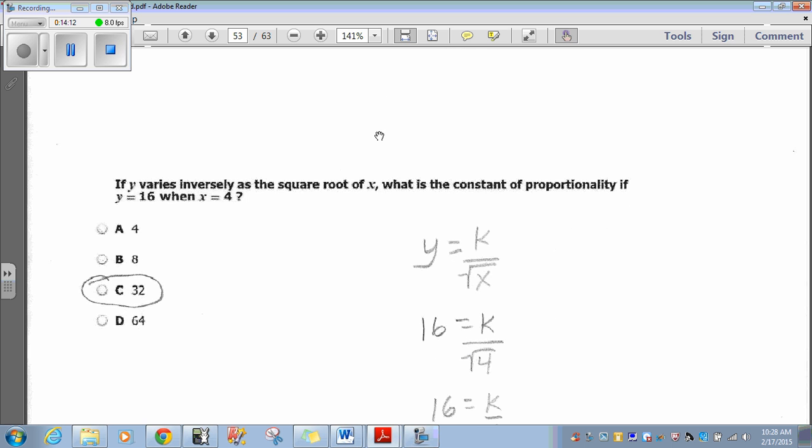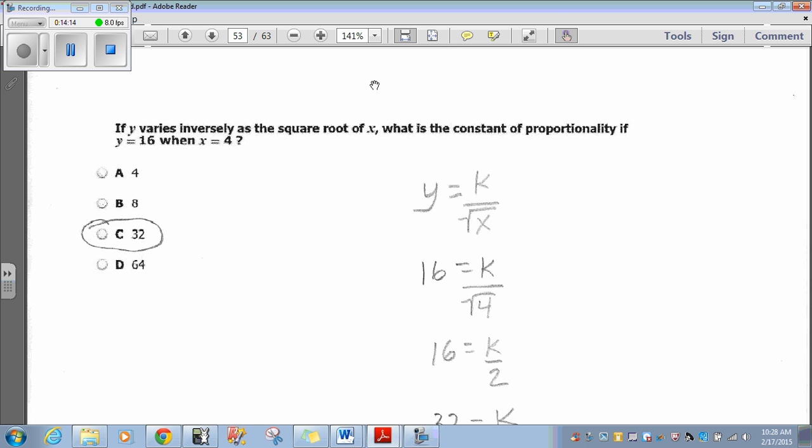Inverse variation. If y varies inversely as the square root of x, what is the constant of proportionality if y is 16 when x is 4? Well, first of all, inverse variation, the formula is y equals k over x. But in this case, it says it varies inversely with the square root of x. So, it'll be y equals k over the square root of x.